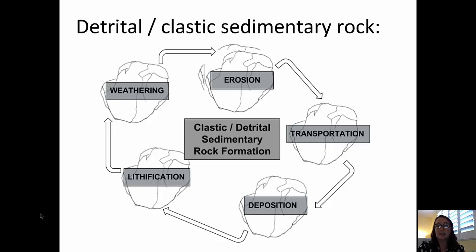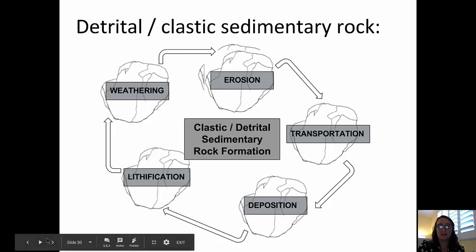Finally, the material is compacted and cemented, or lithified, into a sedimentary rock — where it might be eroded, transported, deposited, and lithified again. So sedimentary rocks can be made of any type of earth material: weathered products from igneous rocks, metamorphic rocks, or other sedimentary rocks.